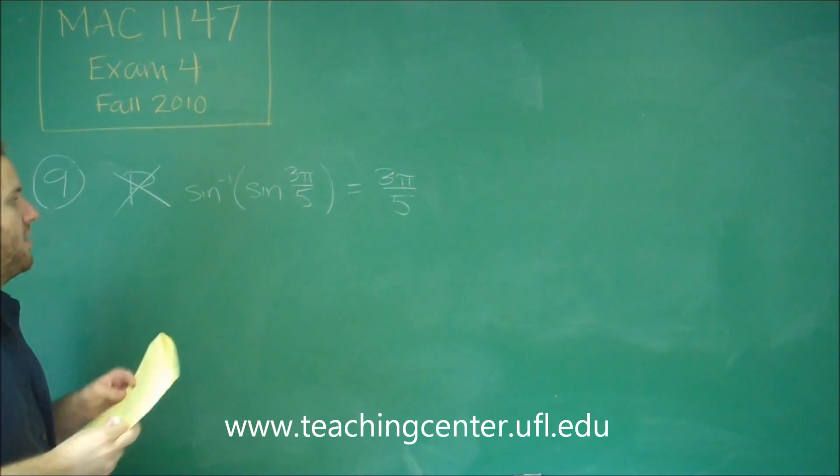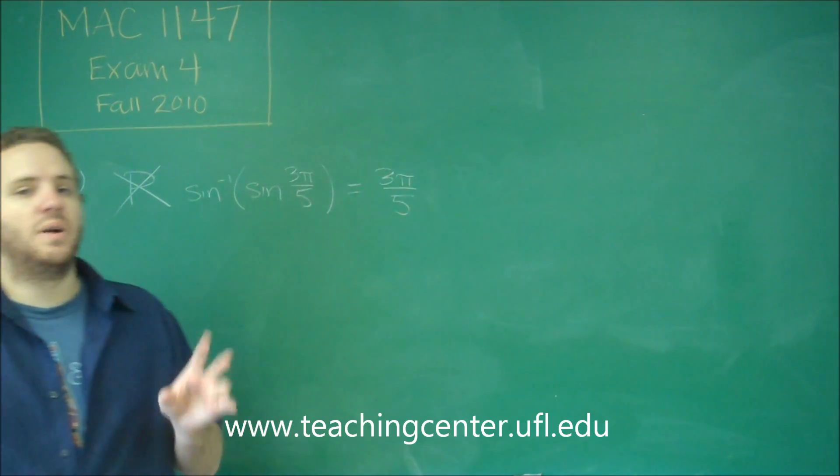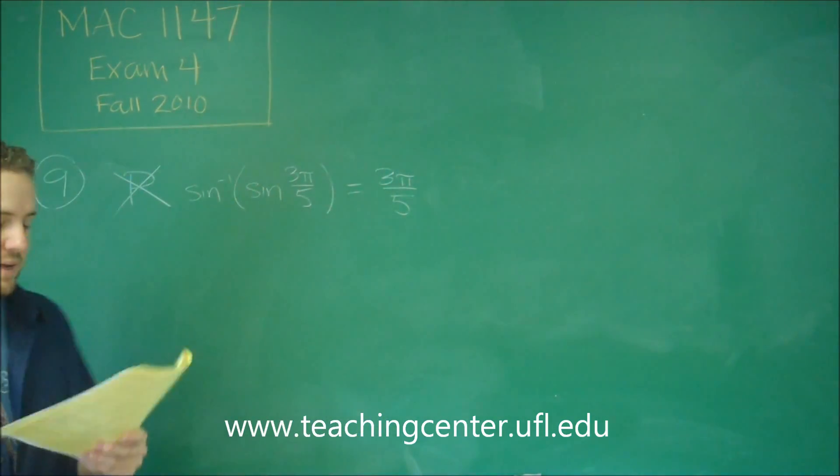The reason being is that 3π over 5 is not the reference angle. That's in the second quadrant. So its reference angle would actually be 2π over 5, and that's what the answer would be.